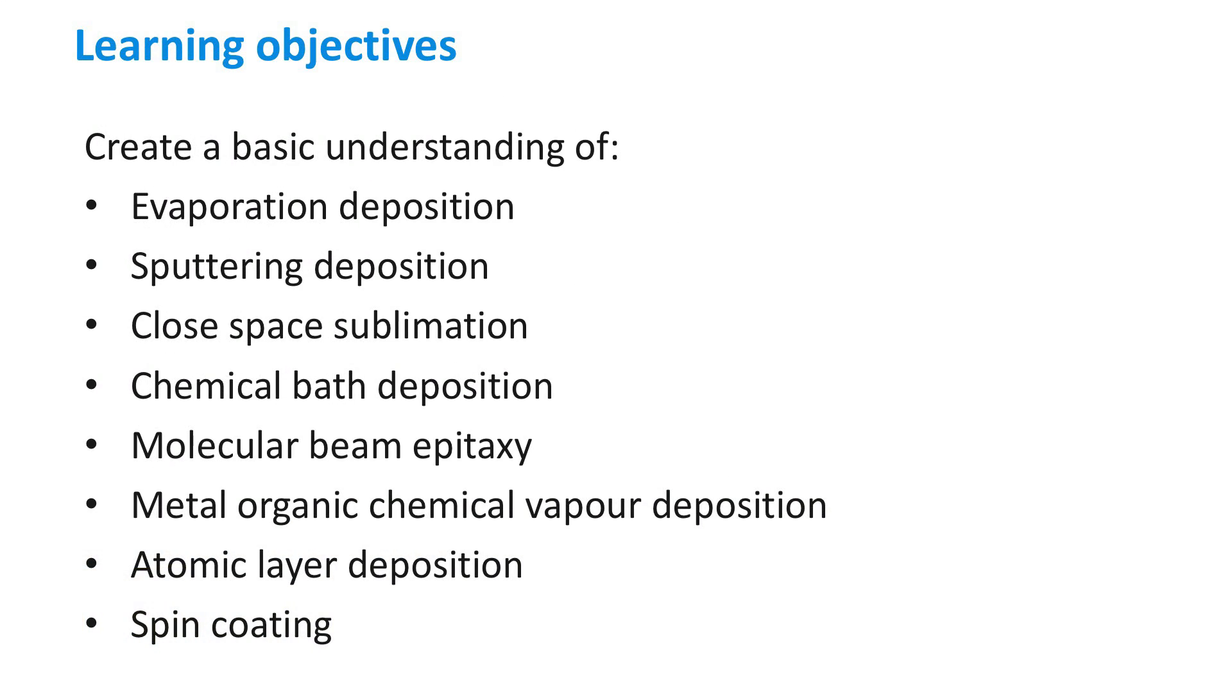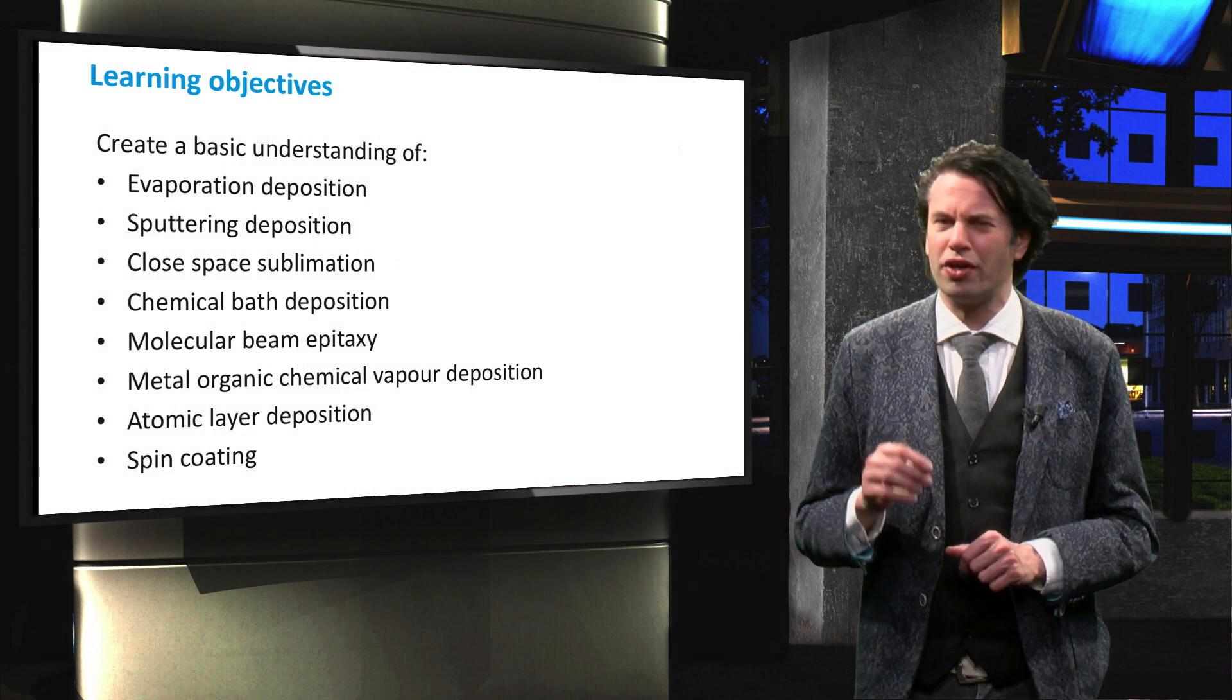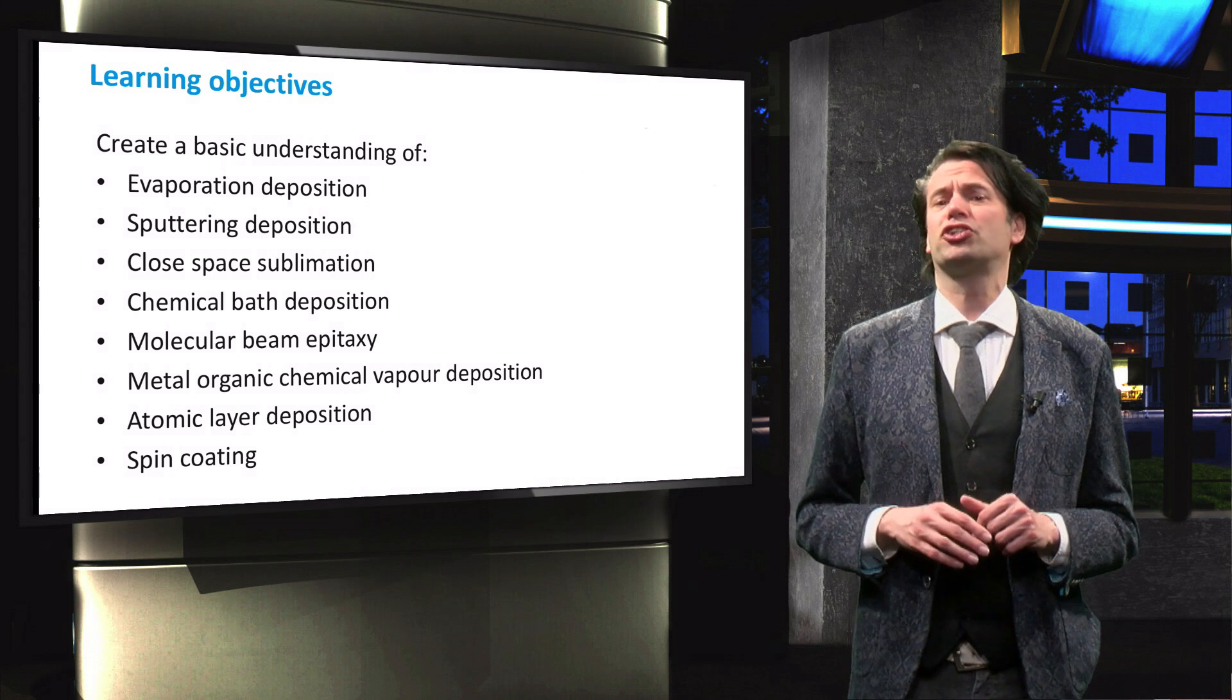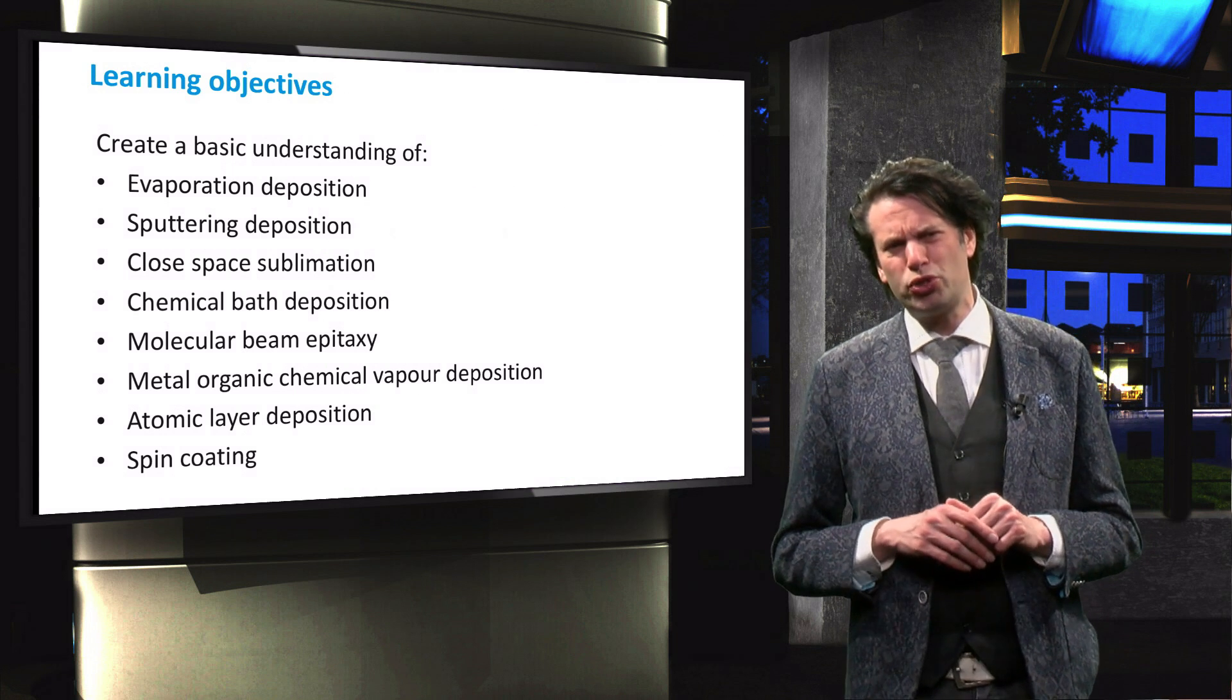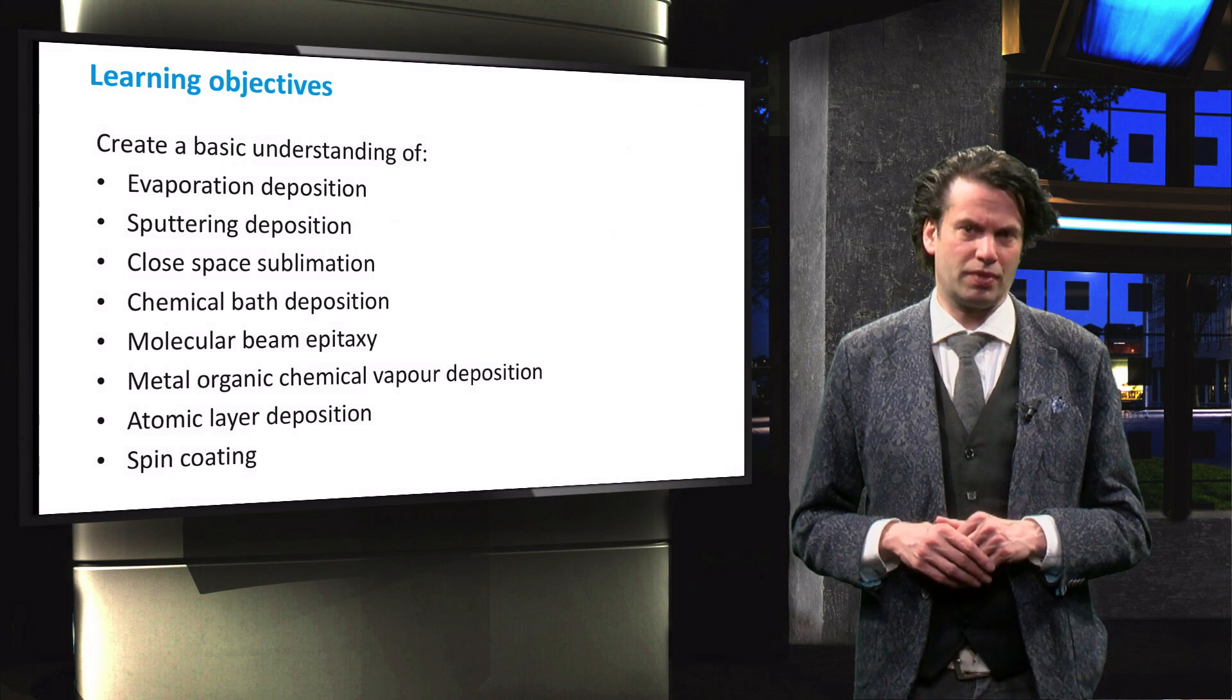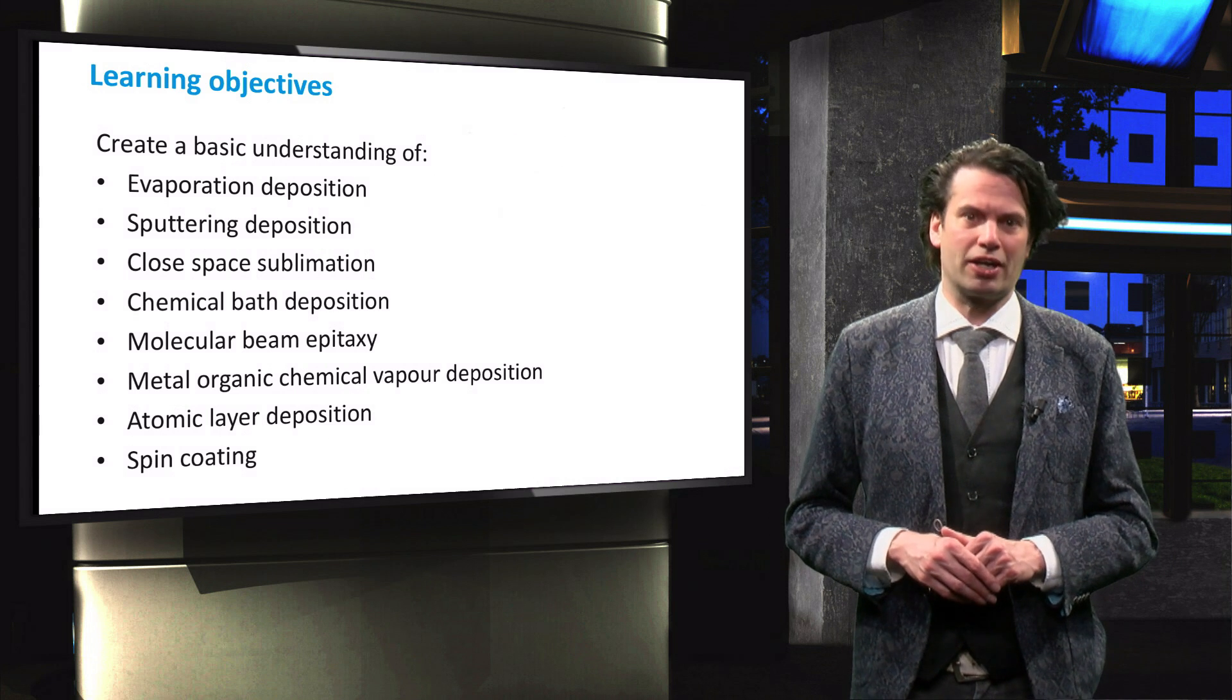We will discuss molecular beam epitaxy and metal organic chemical vapor deposition, which are epitaxial deposition techniques used for the 3-5 technologies. We will then discuss atomic layer deposition, which is primarily used for supporting layers such as TCOs and passivation layers. And finally, spin coating is used for organic photovoltaics.